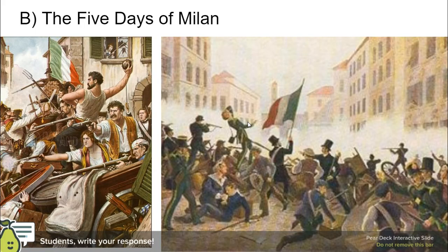The revolutions of 1848 led to massive chaos throughout Europe, and for many Italian patriots this presented an opportunity. Specifically, after the fall of Metternich, when Austria was in chaos, Italians in the city of Milan — part of the Austrian Empire — rose up and tried to declare themselves independent. They raised the Italian tricolor flag, mirrored after the French Revolutionary flag, and tried to tie themselves to a more powerful Italian kingdom known as Piedmont-Sardinia.